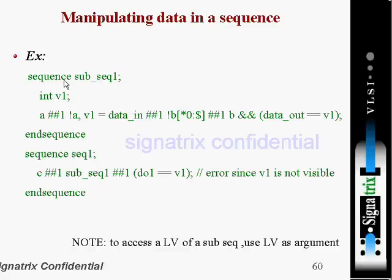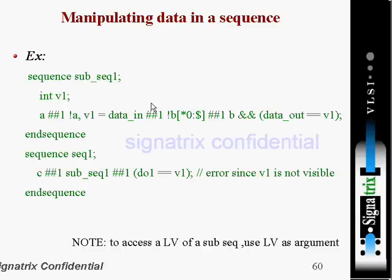One more example using sequences. Sequence name is 'sub_sequence_one' and another sequence named 'sequence_one'. Inside the sequence we have declared 'int v1'. First, 'a' should occur; after one time unit delay 'a' should be inverted. If this condition is satisfied, then 'v1' is assigned to 'data_in'.